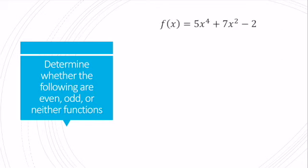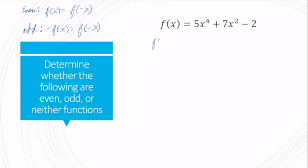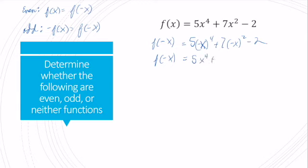Let's determine whether some functions are even, odd, or neither. A function is even if f of x equals f of negative x, and odd if negative f of x equals f of negative x. For the first function, substituting in negative x gives 5 times negative x to the 4th plus 7 times negative x squared minus 2. Since negative x to the 4th is positive x to the 4th and negative x squared is positive x squared, f of negative x equals 5x to the 4th plus 7x squared minus 2, which is the same as f of x. So this function is even.